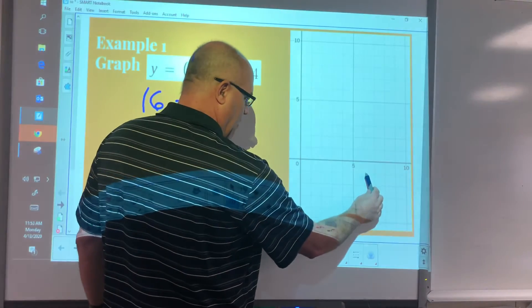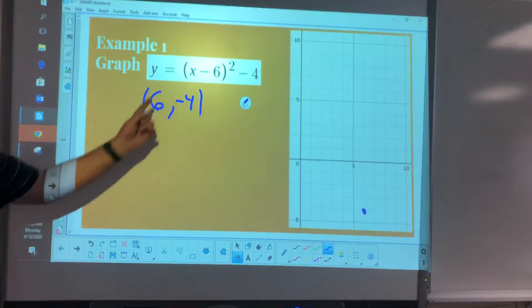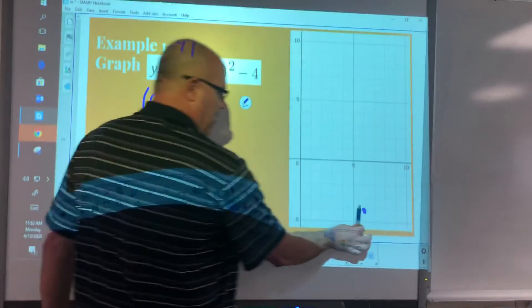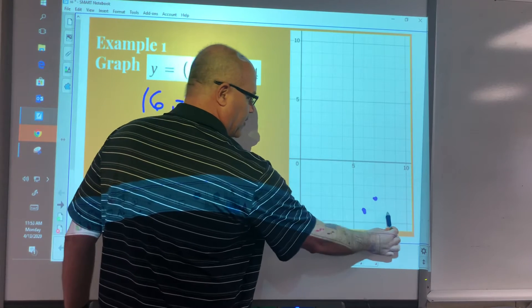Alright, now the a value is 1. So all we do from the vertex now is I go over 1, up 1 squared is 1. I go over 2, 2 squared is 4.